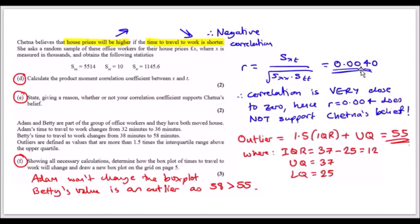State, giving a reason, whether or not your correlation supports Chenna's belief. Chenna's belief is a negative correlation; this is zero. The answer is no. Correlation is very close to zero, hence r equals 0.004 does not support the belief that house prices go up as time to travel to work is shorter. In fact, there is no correlation, so there is no pattern.